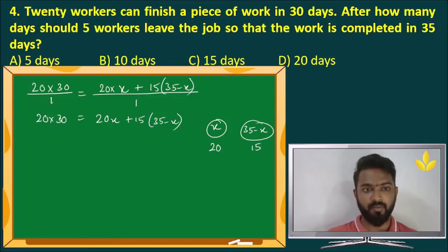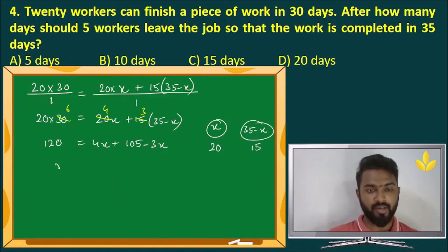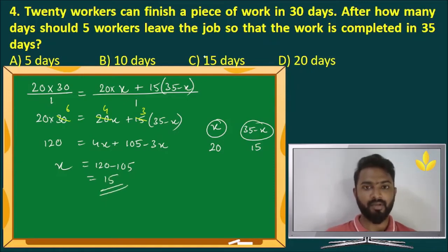First of all, everything is divisible by 5, so 5, 6 are 30, 5, 4s are 20, 5, 3s are 15. Let us expand now. We have 120 equals 4x plus 3 into 35, that is equal to 105 minus 3x. 4x minus 3x is x, we have x on this side, that is equal to 120 minus 105, that is equal to 15 and that is the answer. So sometimes the questions are not very straightforward, the work gets finished in two segments of time. So you have to solve it accordingly.